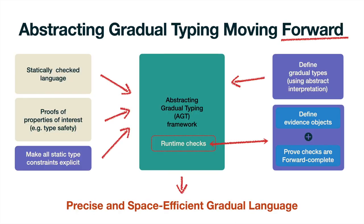As we have shown, while forward completeness constrains the gradual design space, it has desirable properties. When all runtime operations are forward complete, the AGT framework mechanically produces a gradual language that is both precise and space-efficient. Thank you.